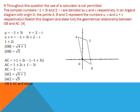Question 9 — calculator not permitted. The complex number u = −1 + 3i and v = 2 − i. On an Argand diagram with origin O, points A, B, C represent u, v, and u + v respectively. u + v = (−1+2) + (3−1)i = 1 + 2i. The magnitude |OB| = √5.